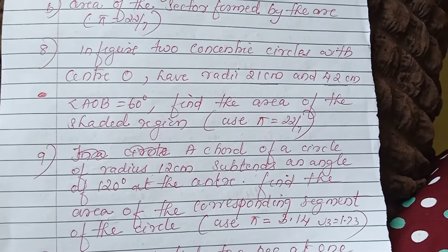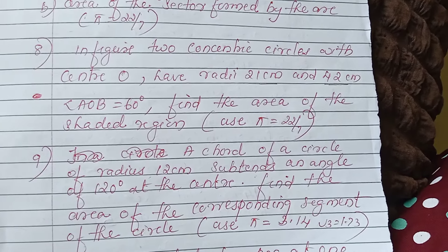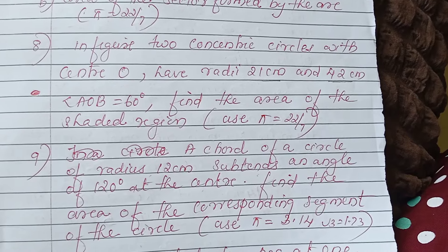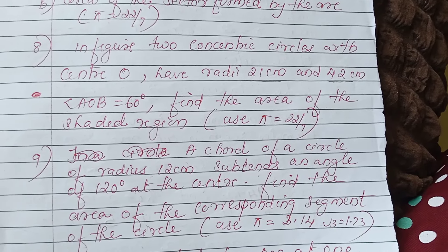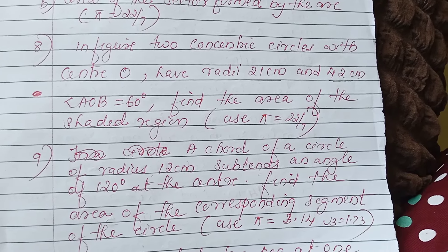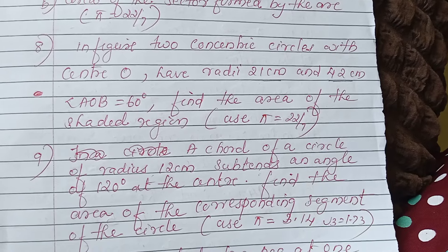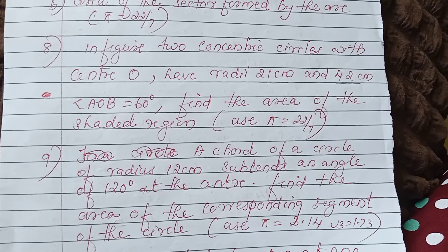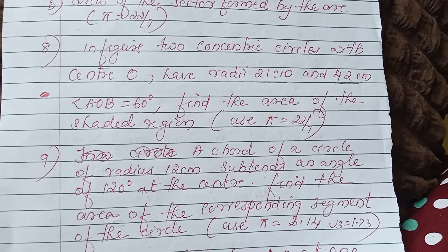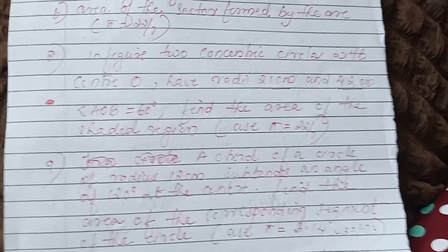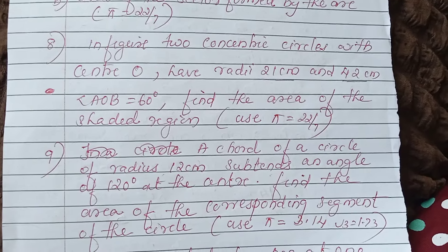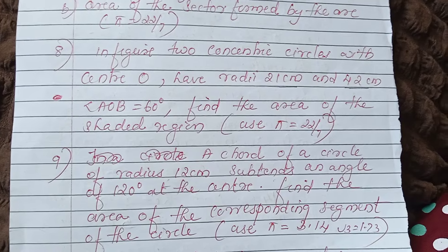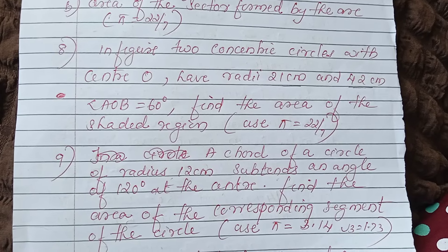Next question: a quadrant of a circle of radius 12 cm subtends an angle of 120 degrees at the center. Find the area of the corresponding segment of the circle. Use pi = 3.14 and root 3 = 1.73.